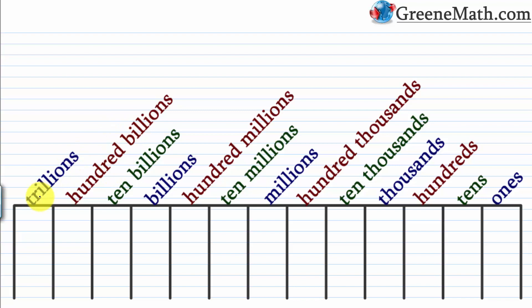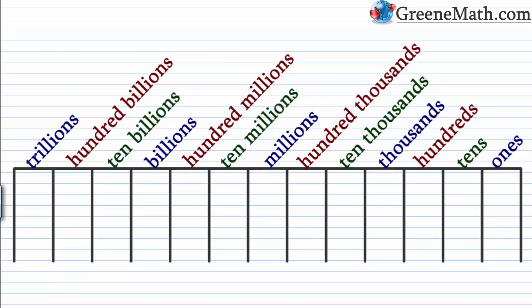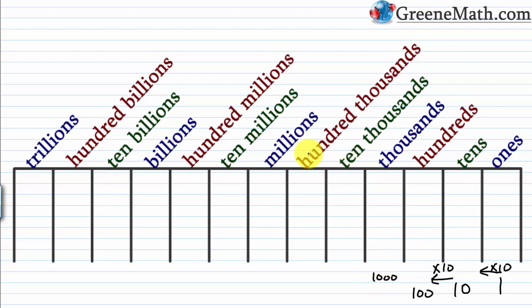It doesn't stop at trillions. Here's a useful trick: start with ones (write a 1), then as you move left, multiply by 10 each time. So 1 times 10 is 10 (tens), 10 times 10 is 100 (hundreds), then 1,000, 10,000, 100,000, a million, 10 million, 100 million, and so on. After trillions, a trillion times 10 is 10 trillion, then 100 trillion. This trick helps if you ever get stuck without a place value chart.